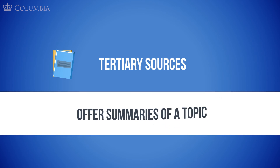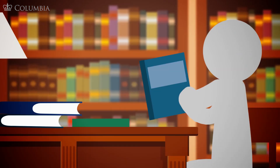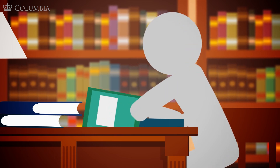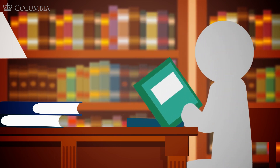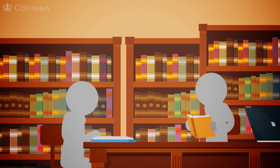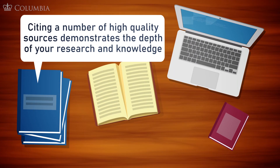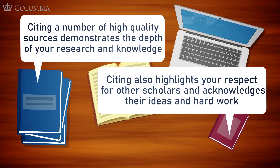Tertiary sources offer summaries or distillations of a topic. These include encyclopedias, dictionaries, and handbooks. Tertiary sources help you understand a topic without delving deeply into its intricacies. For example, if you need to understand how an ellipsis works as a literary device in an Emily Dickinson poem, using a literary handbook helps you identify and recognize an ellipsis' impact on the poem's tone and overall message. As researchers, we're ethically obligated to present our research fairly and accurately. Citing a number of high-quality sources demonstrates the depth of your research and knowledge in a specific topic, and highlights your respect for other scholars, acknowledging their ideas and hard work.